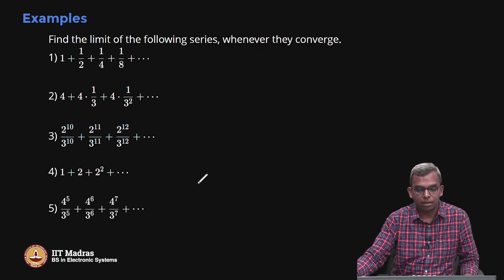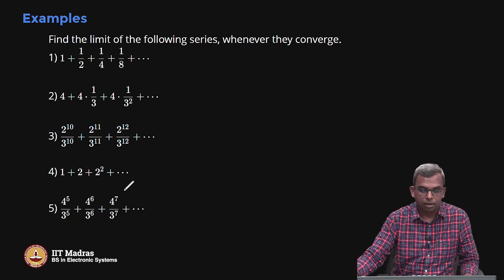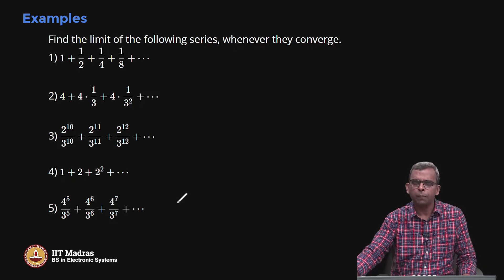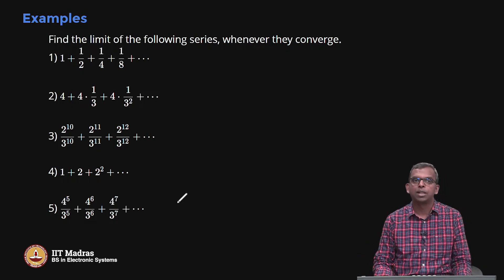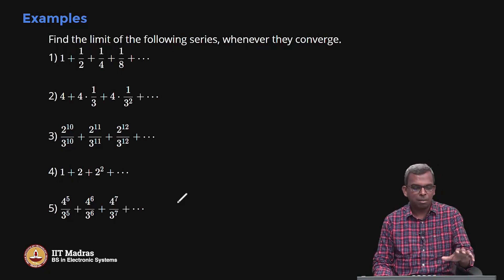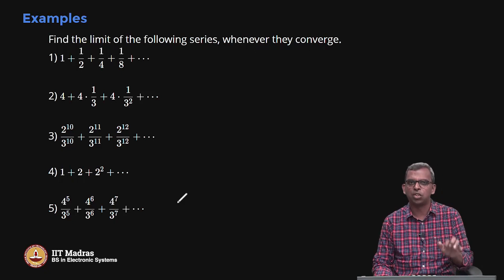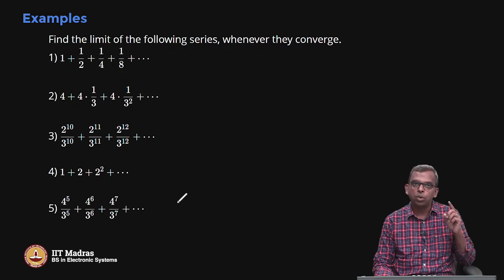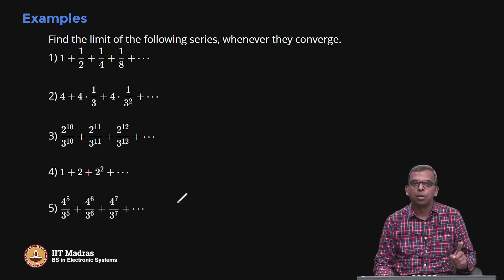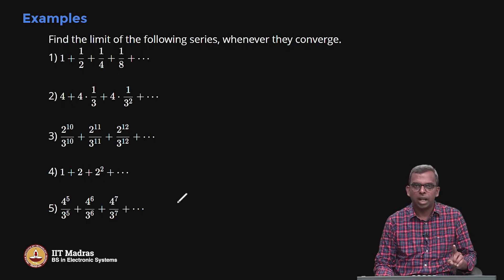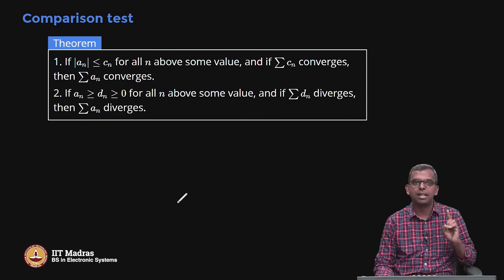Given a series, you identify whether it is geometric, adjust it into known form, and determine: if |r| < 1 it converges; if |r| ≥ 1 it diverges. But this is not the only thing you can do with geometric series. You can use the geometric series convergence result to find convergence for other series. This is called the comparison test — an extremely powerful idea.